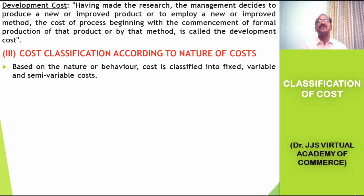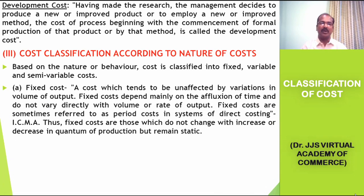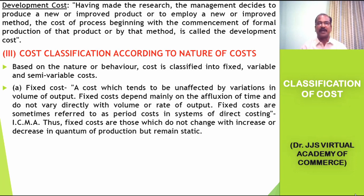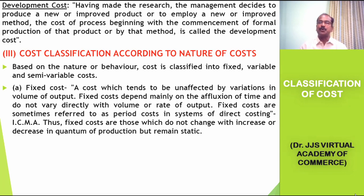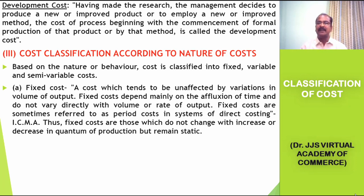The next classification of cost is according to the nature or behavior. Based on the nature of behavior, cost is classified into fixed, variable, and semi-variable. Fixed cost in total remains constant irrespective of the changes in volume of production. Whether we use 50% or 100% of the production capacity of the plant, certain expenses remain unchanged in total. Examples include rent, depreciation, salary, etc.